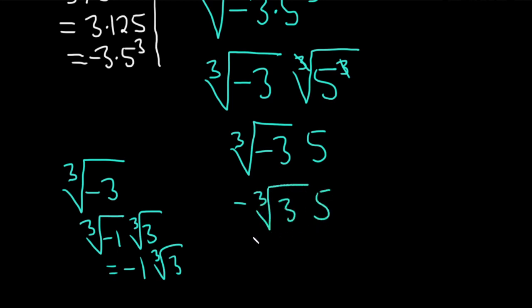And let's go ahead and put the 5 in the front, just because it looks a lot better. This would be 5, or negative 5, cube root 3. That's probably the best answer.